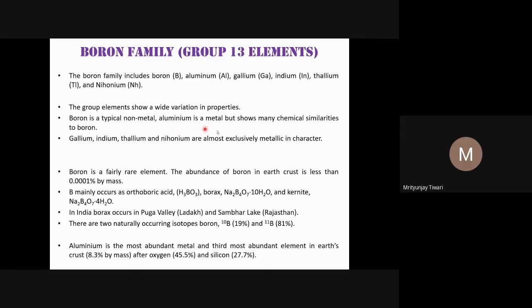Boron is a fairly rare element — its percentage abundance on earth by mass is only 0.00001%. Boron mainly occurs as orthoboric acid (H₃BO₃), borax (Na₂B₄O₇·10H₂O), and kernite (Na₂B₄O₇·4H₂O). In India, borax deposits are found in the Pulga Valley in Ladakh and at Sambhar Lake in Rajasthan.